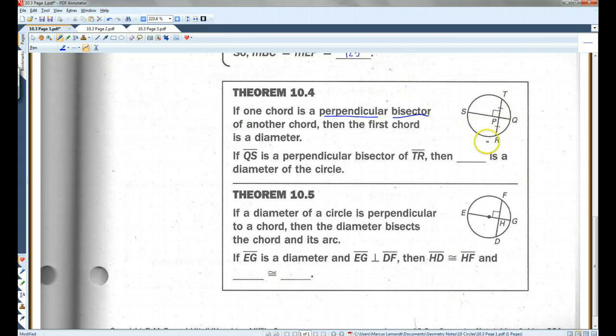So, if you have a chord, and it's being intersected by another chord in such a way that it makes a right angle, and it cuts it exactly in half, this chord has to be a diameter. So, if QS is a perpendicular bisector of TR, then QS is a diameter of the circle.